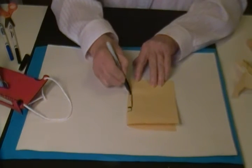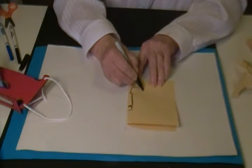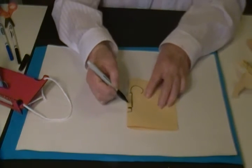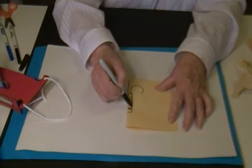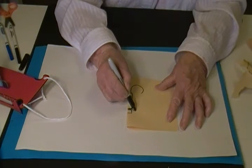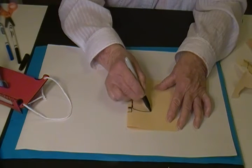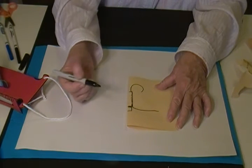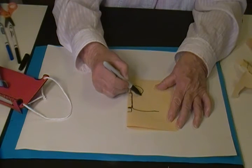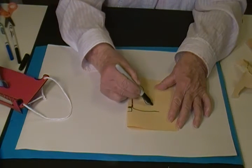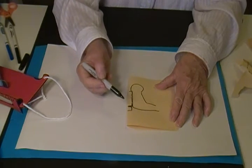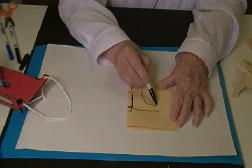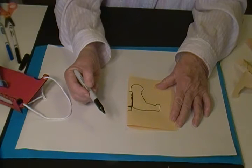For the head, I drew a circle. Then for the bottom part, I drew a line out like this all the way. For the front, I drew another kind of L shape till I get to the end of the leg, curve up, and that makes the foot.